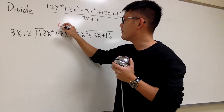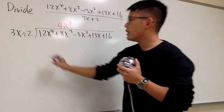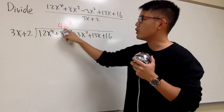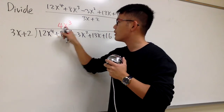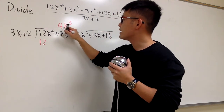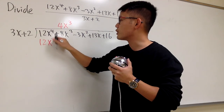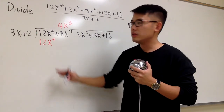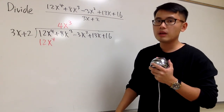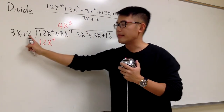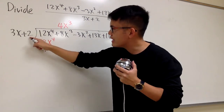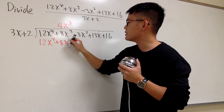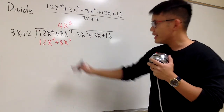Once you identify what you need, you go ahead and multiply it with the divisor. 4 times 3 is 12, and x to the 3rd power times x gives x to the 4th power. The first term should always cancel out when doing long division — and you can see they are cancelling each other out. Also be sure to take 4x to the 3rd power times the second term: 4 times 2 gives 8, and x to the 3rd power times the constant gives 8x to the 3rd power.